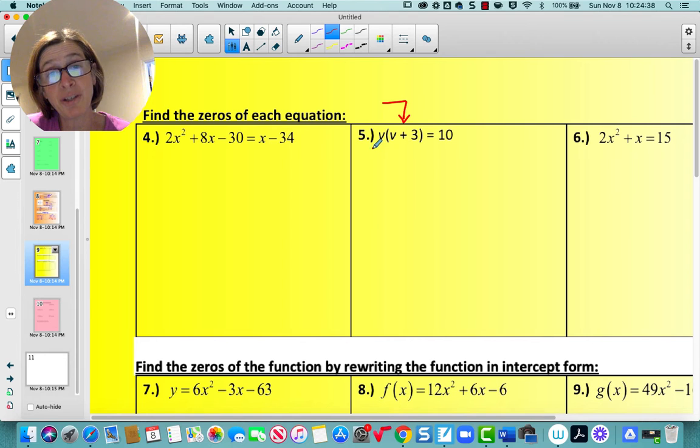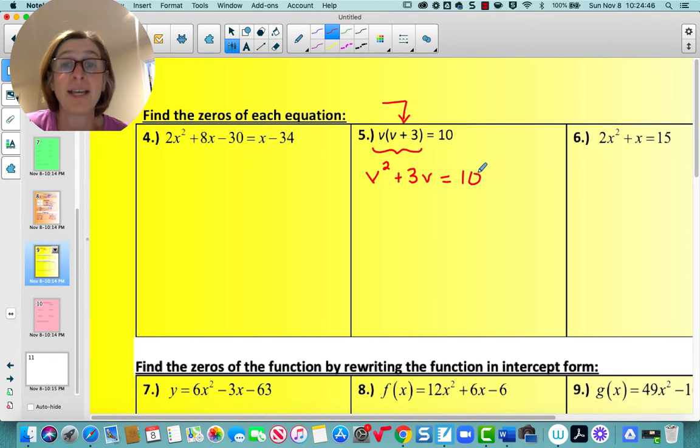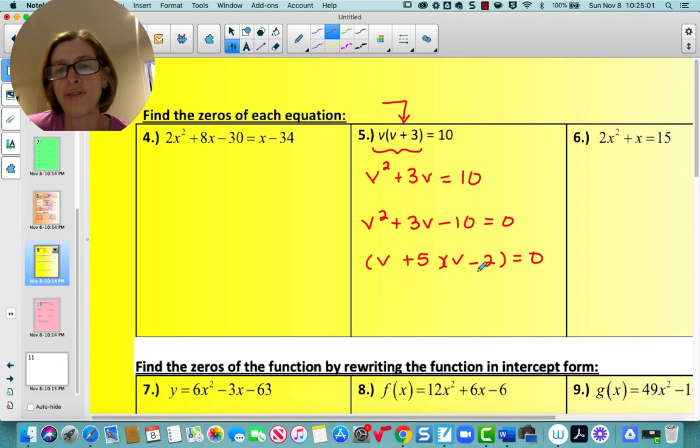So you'd actually have to simplify the expression on the left. So you'd have to distribute getting v squared plus 3v equals 10. Now it's a quadratic set equal to zero. So I'm going to get the quadratic set equal to zero and solve by factoring. So we get v and v and plus five minus two. So v would equal negative five and v would equal two by the zero product property.